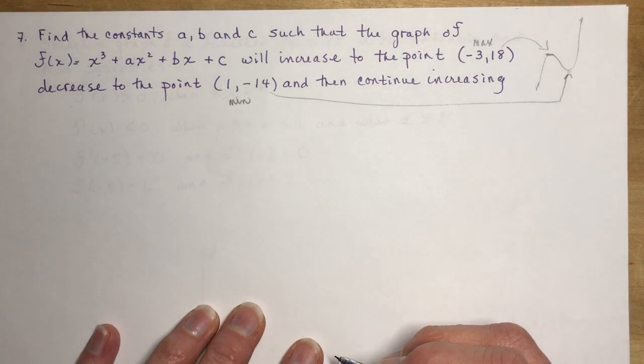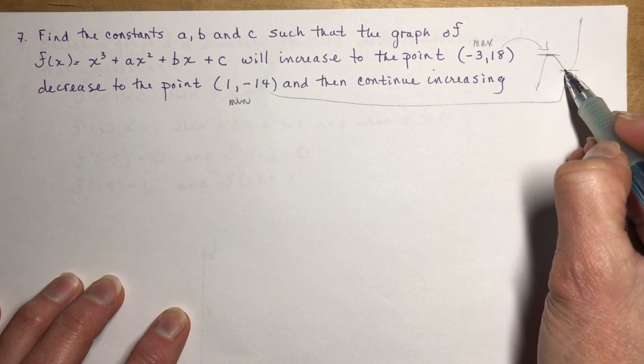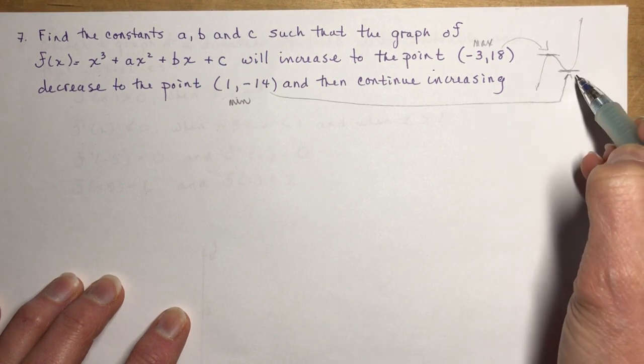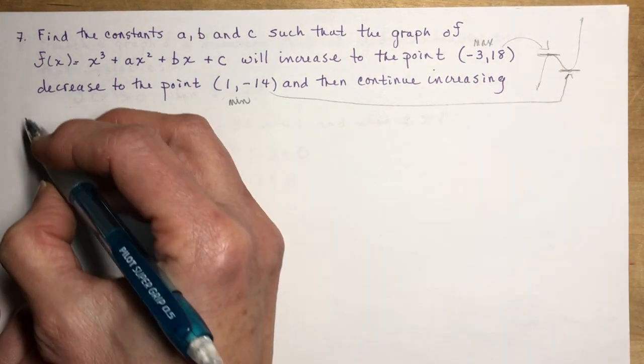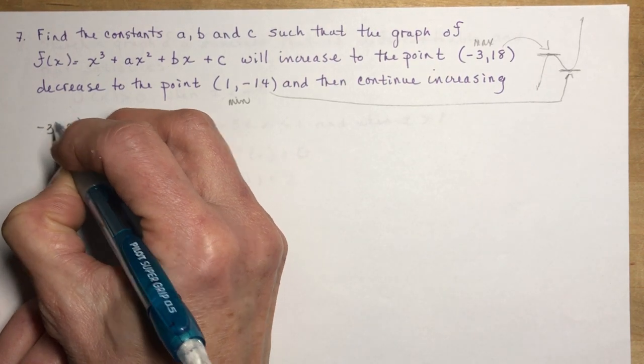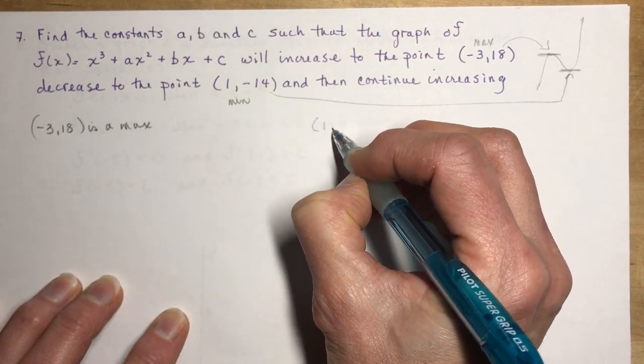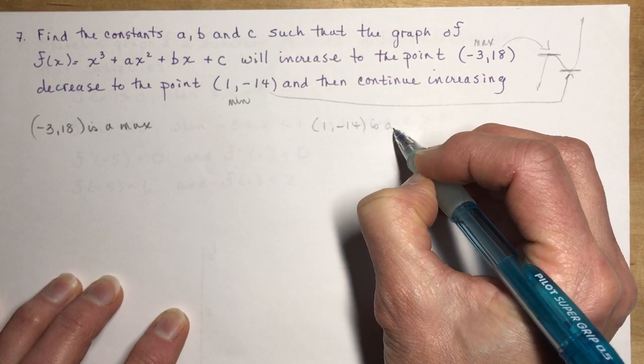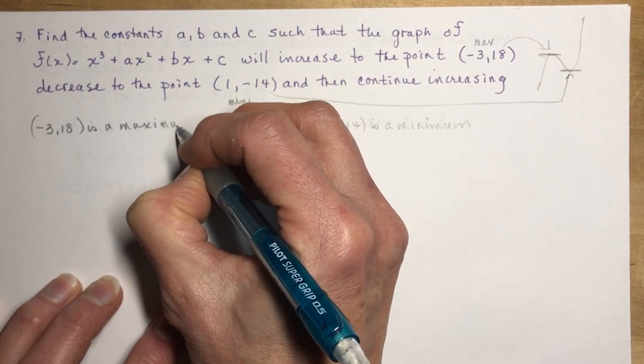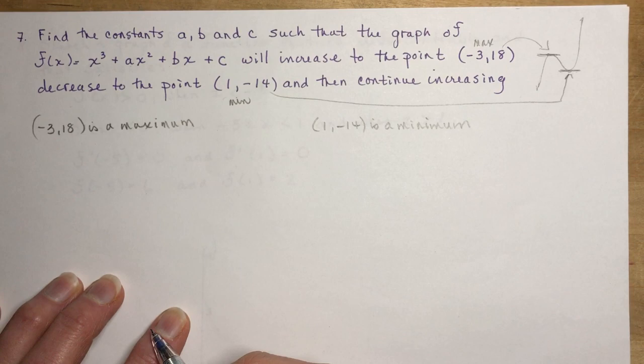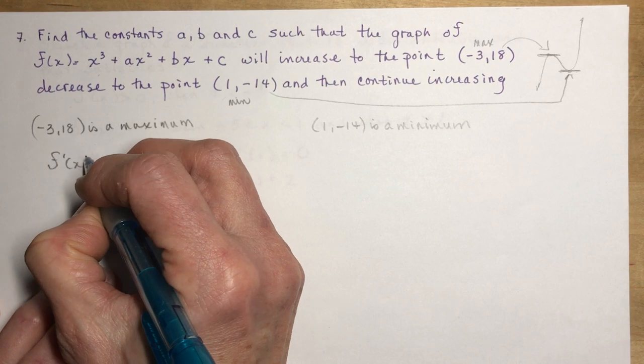These two points, (-3,18) and (1,-14), they're telling you that these are maximum and minimum values. So this is a maximum and this one's going to be a minimum. You know that if you are at a maximum or a minimum, then there will be a horizontal slope there, and that slope is going to be 0. Always take the derivative. That's why you're in calculus.